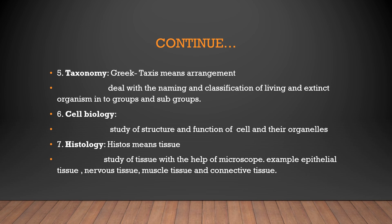Next is Histology. 'Histos' means tissue. So histology is the microscopic study of tissue. There are four basic types of tissue: epithelial tissue, which covers the skin surface; nervous tissue, which includes the brain, spinal cord, etc.; muscle tissue, which makes up your muscles; and connective tissue, which connects tissues — for example, blood is a connective tissue.